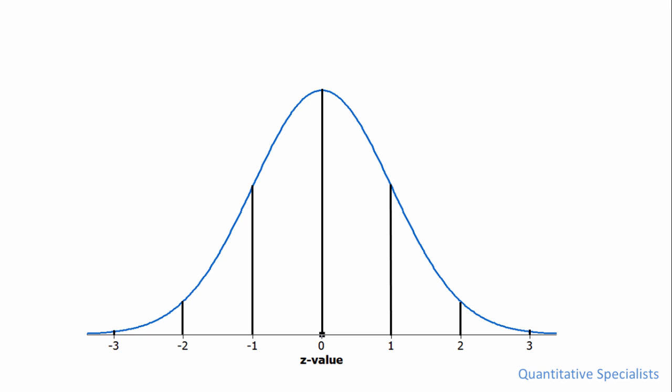And for a z of negative two, for example, that's two standard deviations below the mean since it's negative. So anytime you hear a z-score like a z-score of negative two, that indicates the number of standard deviations a value is from the mean.